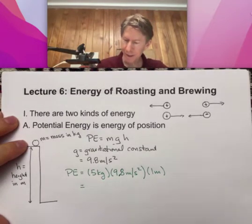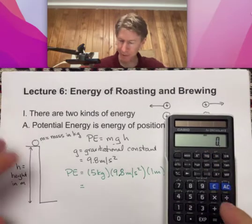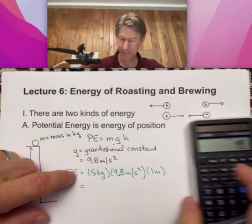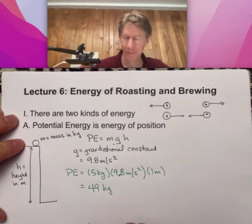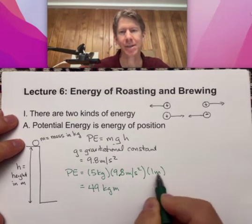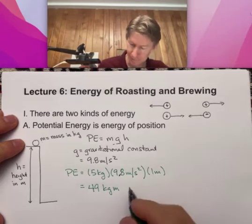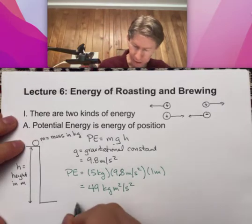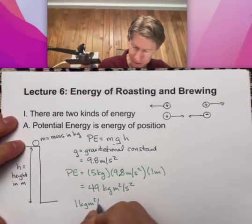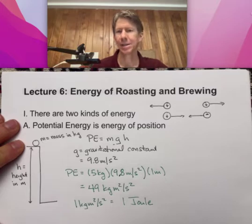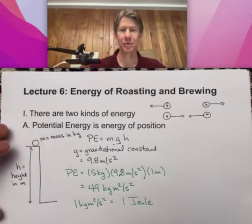Plugging these numbers in we get 5 times 9.8 times 1, I get 49. None of our units cancel out here. We get meter squared because there's a meter in the gravitational constant and there's a meter in the height, divided by second squared, which is definitely a strange unit. That's why scientists have defined one kilogram meter squared per second squared as something called one joule. We'll get a little bit of an idea about what a joule is. Joule was a famous scientist.